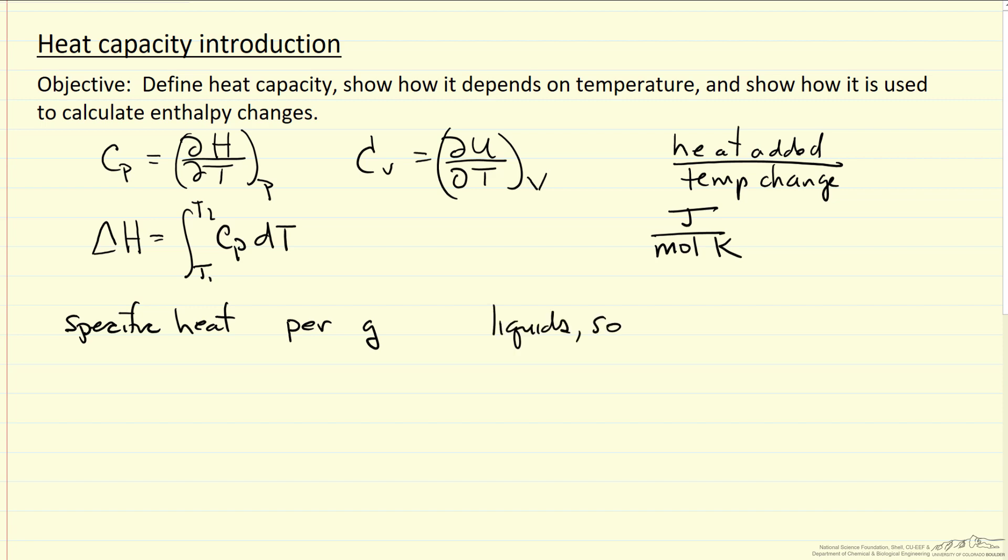So for liquids and solids, Cp and Cv are about the same thing. Constant pressure, constant volume doesn't really matter very much for liquids and solids. For ideal gases, Cp is Cv plus the ideal gas constant. And for real gases, neither one of these are the case, and it depends on the gas.